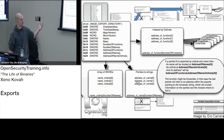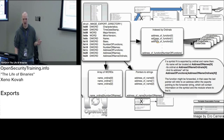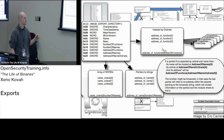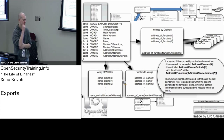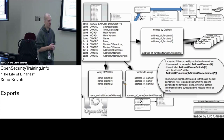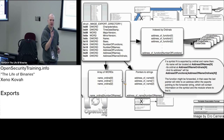So here's the pointers to strings and here's the list of RVAs — those are the first two things I initially said. The first list is the RVAs, the second list is the strings. And then there's this other thing called ordinals, which has to do with a particular function being at a particular index in these other tables. We've been looking at imports that import by name — you say 'I want printf,' you give a string, and that's the function you want to import.